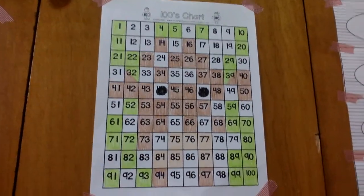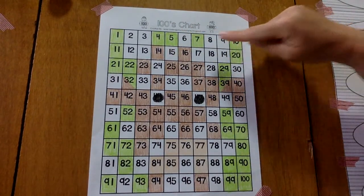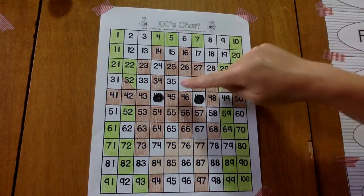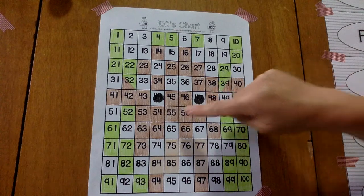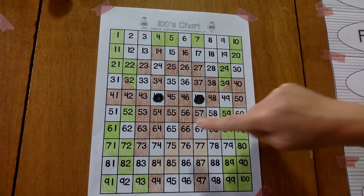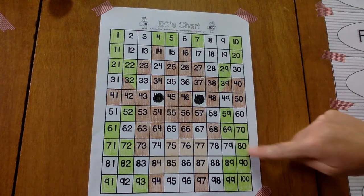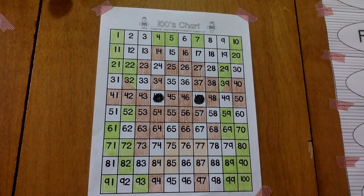Today let's count by fives again. 5, 10, 15, 20, 25, 30, 35, 40, 45, 50, 55, 60, 65, 70, 75, 80, 85, 90, 95, 100.